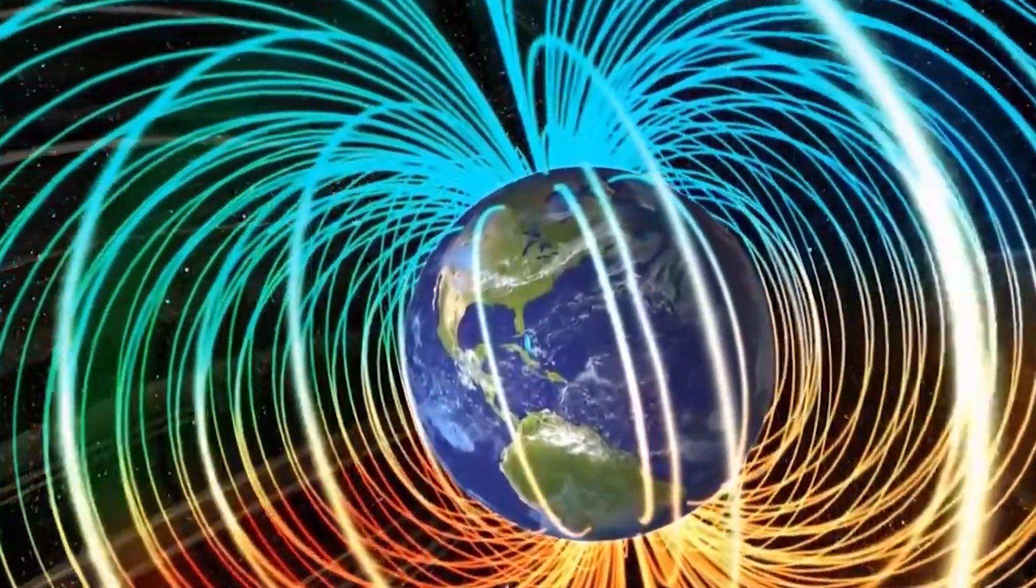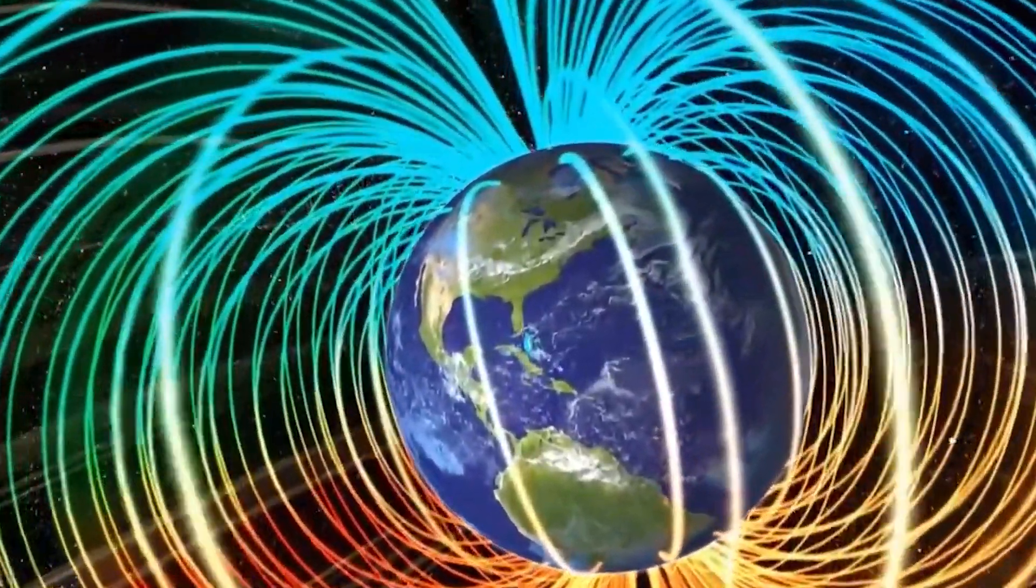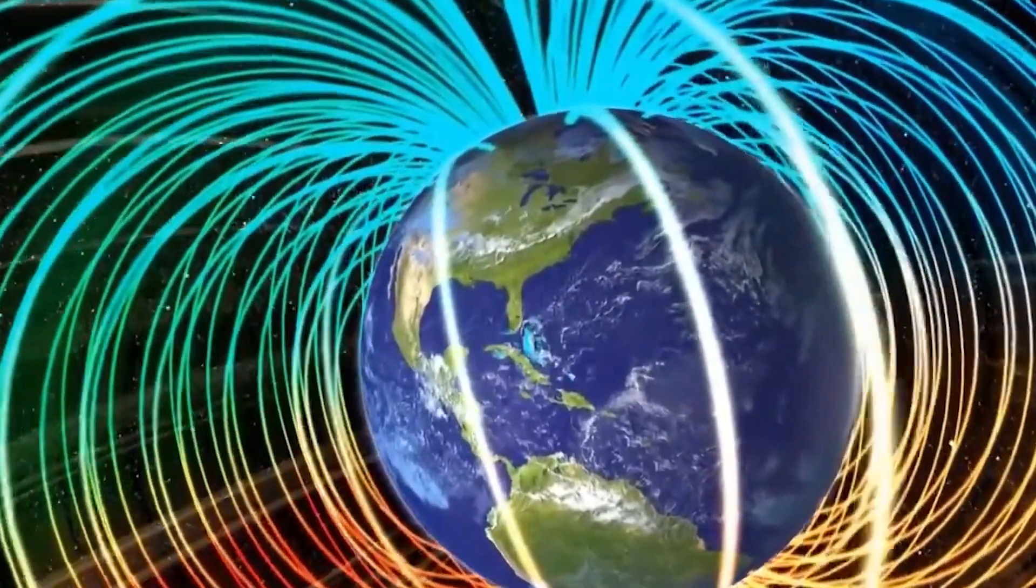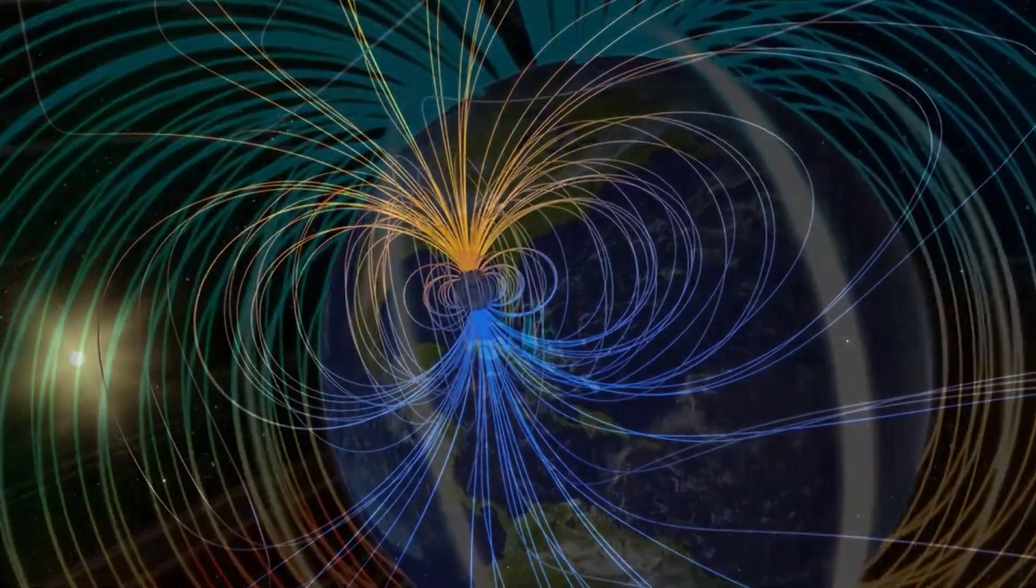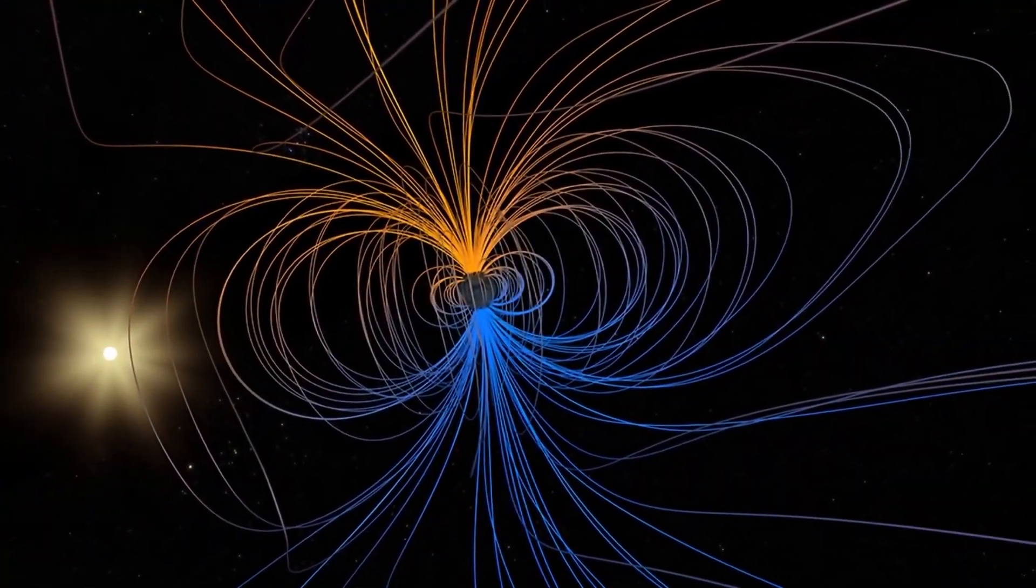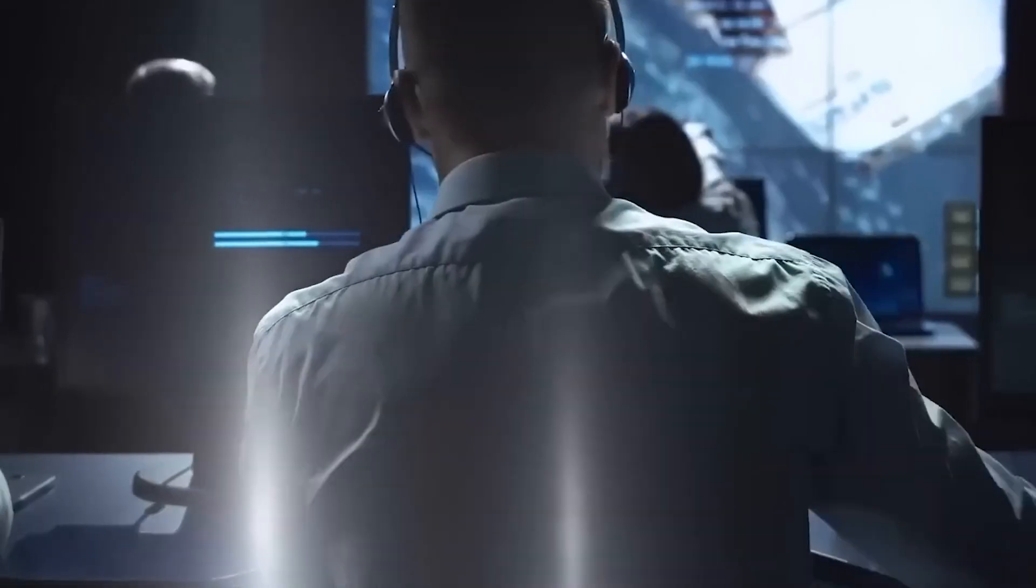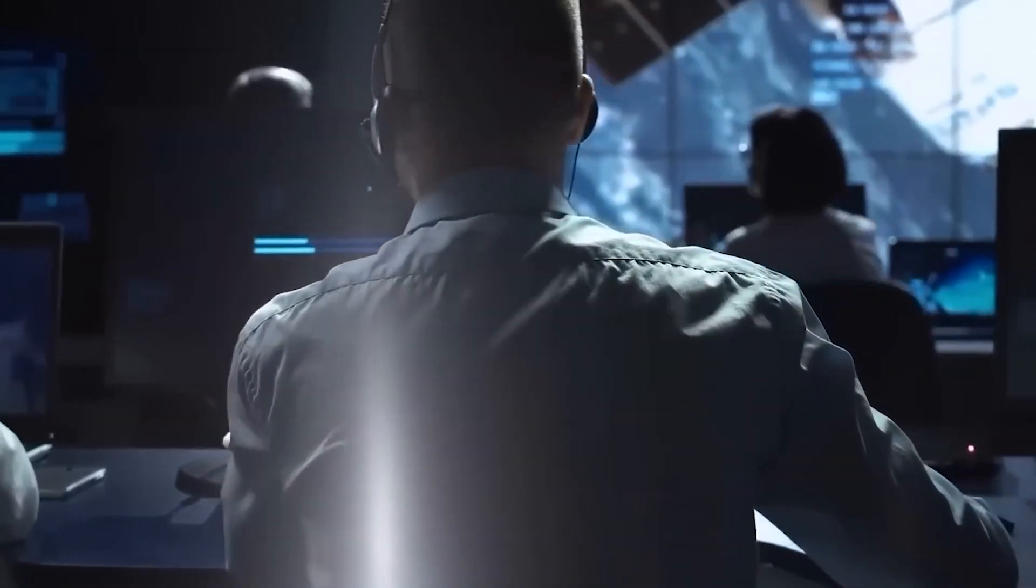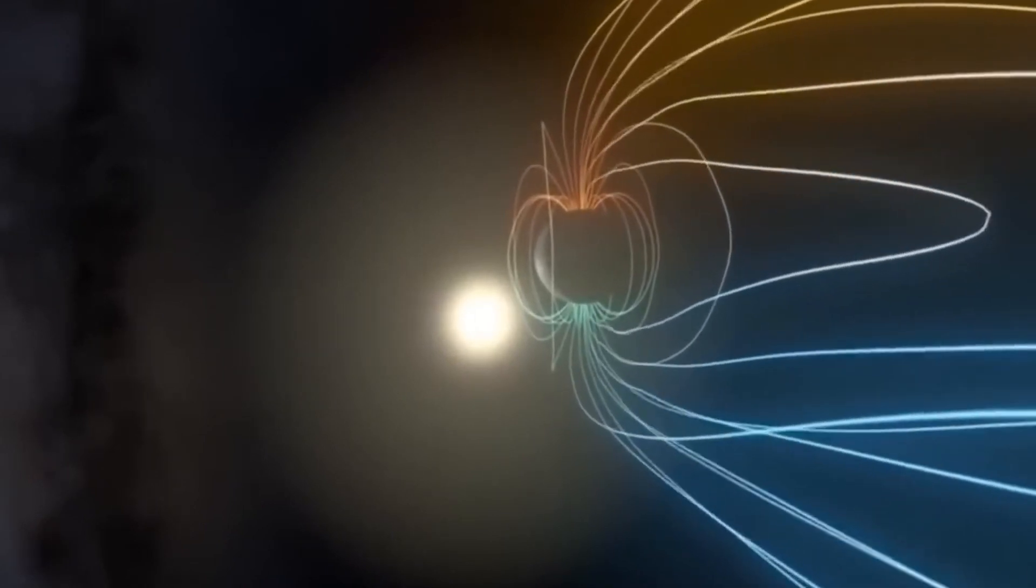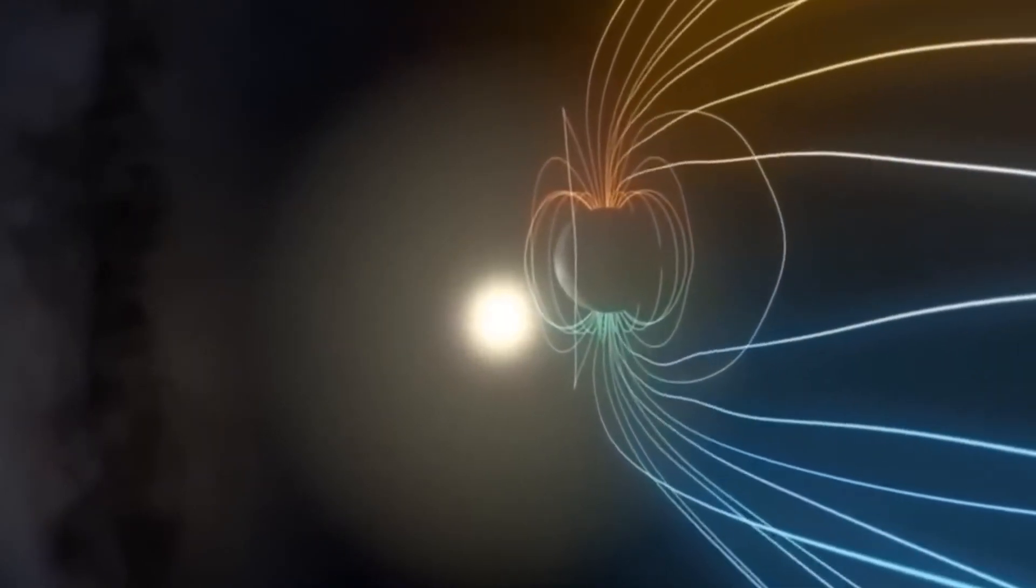Our Earth's magnetic field is constantly in flux. This change in flux is not unusual and has been going around for many years. However, recent reports have uncovered a mysterious twist in this ongoing phenomenon. And guess what? NASA has also expressed its concern about this unusual happening.